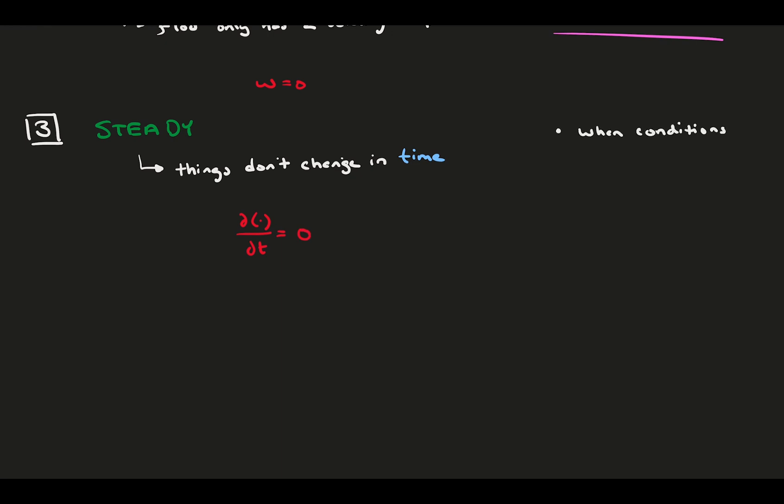This is a super common one and occurs whenever you have a flow that boundary conditions or the forcing are not changing in time. For example, if you have a pump driving a pipe flow with a constant pressure, the flow generally will not change no matter what time you look at it. You could walk away for an hour, or maybe even a day, and come back and it would be doing the same thing.